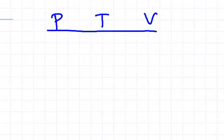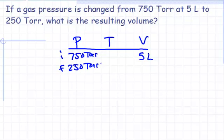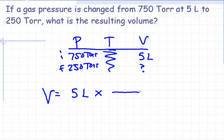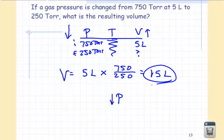Example 2: Gas pressure changes from 750 torr at 5 liters to 250 torr. Temperature is not mentioned, so it's constant. Volume equals 5 liters times the pressure fraction. Pressure goes from 750 to 250 — pressure is going down, so volume goes up. Put the larger number on top: 5 times 750 over 250 equals 15 liters. The pressure is one-third, so the volume is three times.